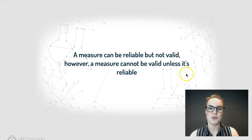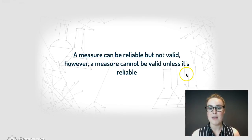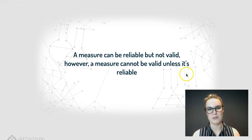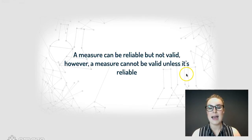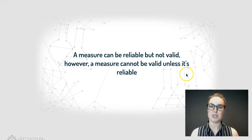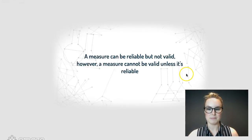Based on that ruler situation, a measure can be reliable but not valid — like our wooden ruler, it can give you the same results every time but those results aren't correct or valid. However, a measure can't be valid unless it's also reliable, because if it's not going to give you the same result every time, it's of course not going to measure what it's designed to measure.